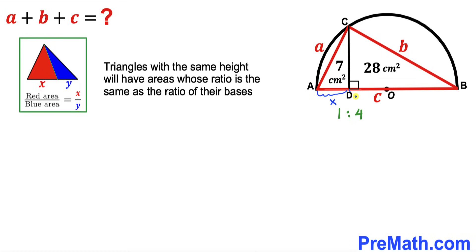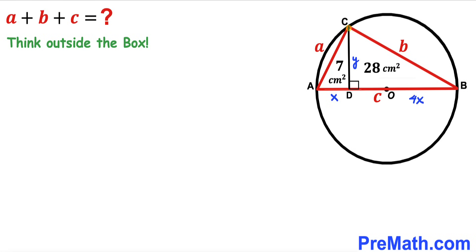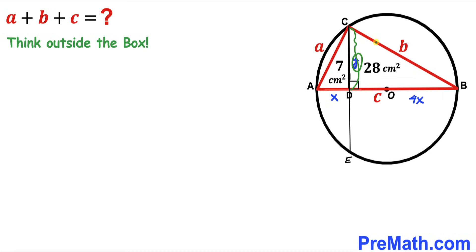So if segment AD is 1x, then segment BD is 4x. I'm going to label the perpendicular CD as y. Now, thinking outside the box, let's consider the whole circle. I've extended perpendicular CD all the way to point E. Since segment CD is y, by symmetry segment DE is y as well.